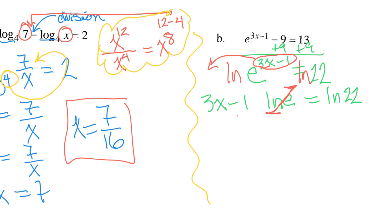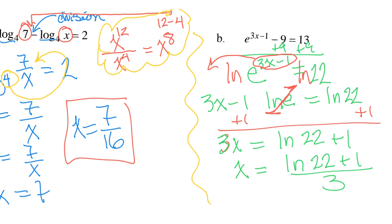And so I'm going to add 1 to both sides. We're trying to solve for x. Add 1 to both sides. So I get 3x equals natural log of 22 plus 1. And divide both sides by 3. So natural log of 22 plus 1 all over 3 would be my answer.